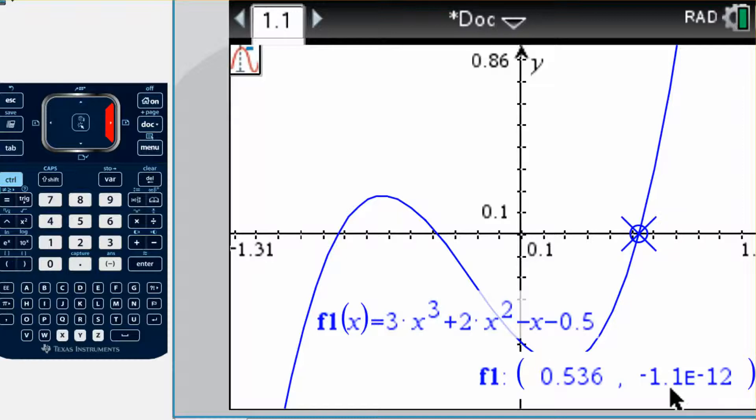If I keep moving along and I go close to the last one, again it stops there. Sometimes it does this though where it doesn't say zero, it says negative 1.1e to the negative 12. That means times 10 to the negative 12, and that's an extremely small number.